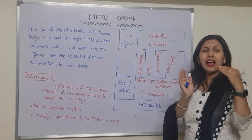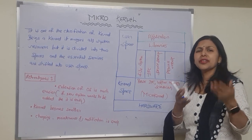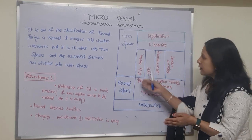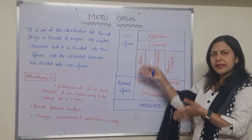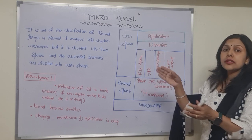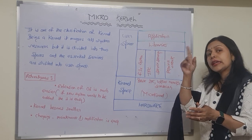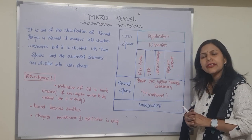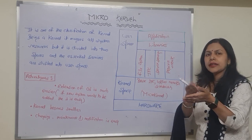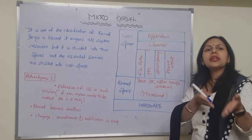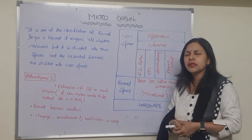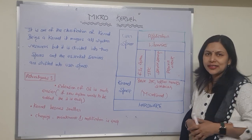Micro kernel is one of the classifications in the types of kernel. In the case of micro kernel, as you can see, there are two spaces: user space and kernel space. In the case of monolithic kernel, all the main essential services like memory management, file management, process management, and shell management were in the kernel space.